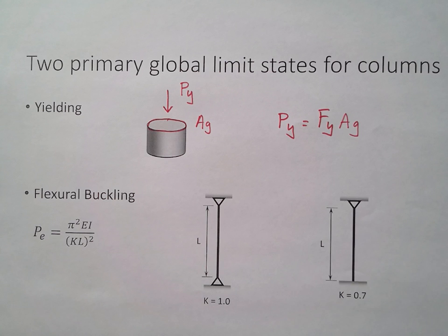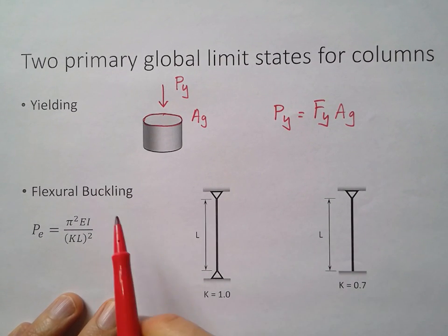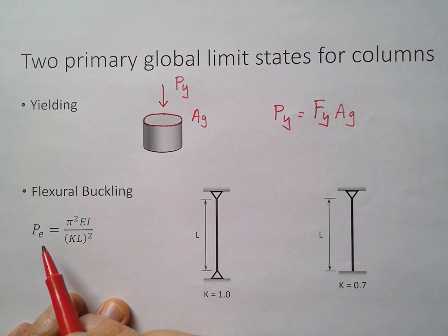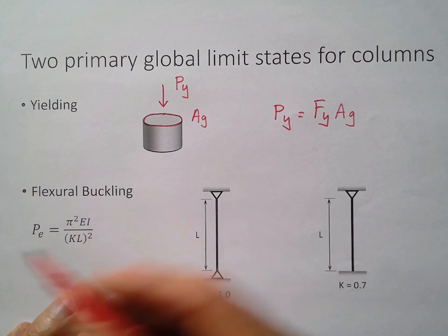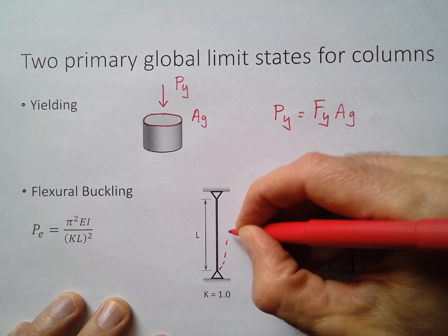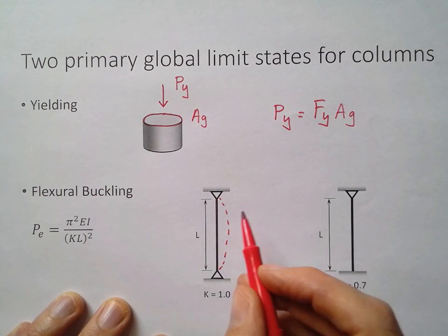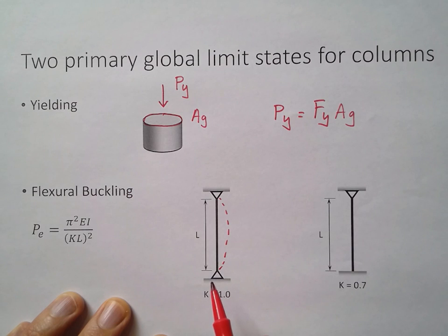Now, buckling is more of an instability type issue where once I get to a certain load, P sub E over here—that stands for the elastic buckling force—once I get to that force that's going to cause this to buckle, it will actually deflect out like this. This is highly exaggerated, but the whole thing buckles out.